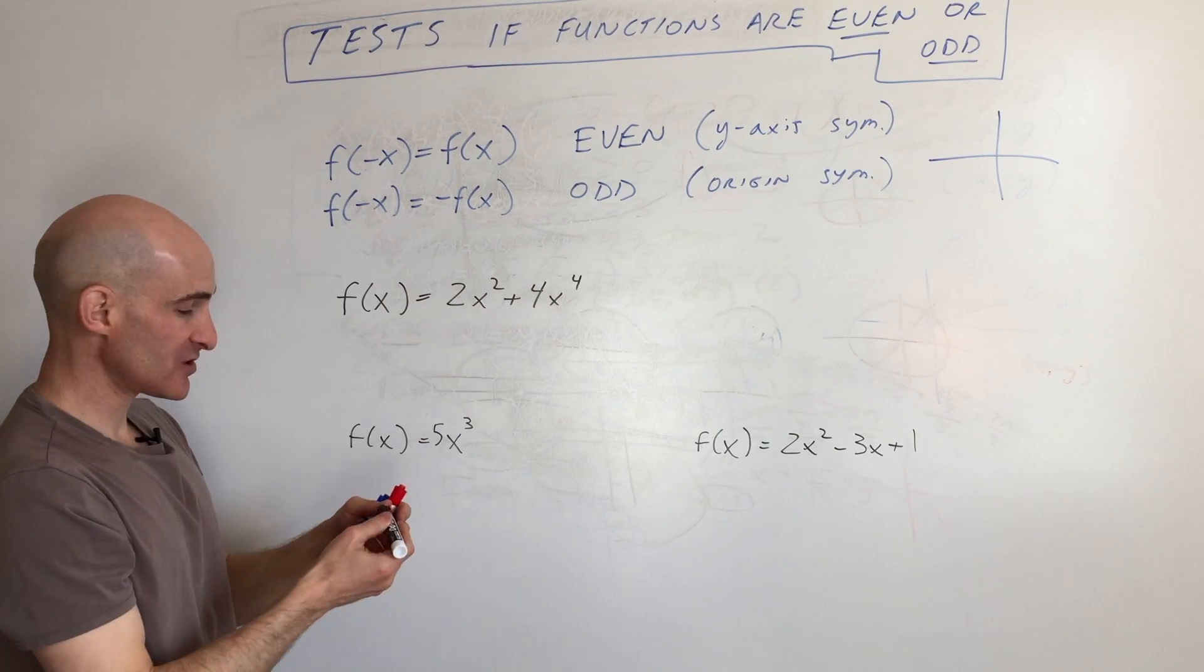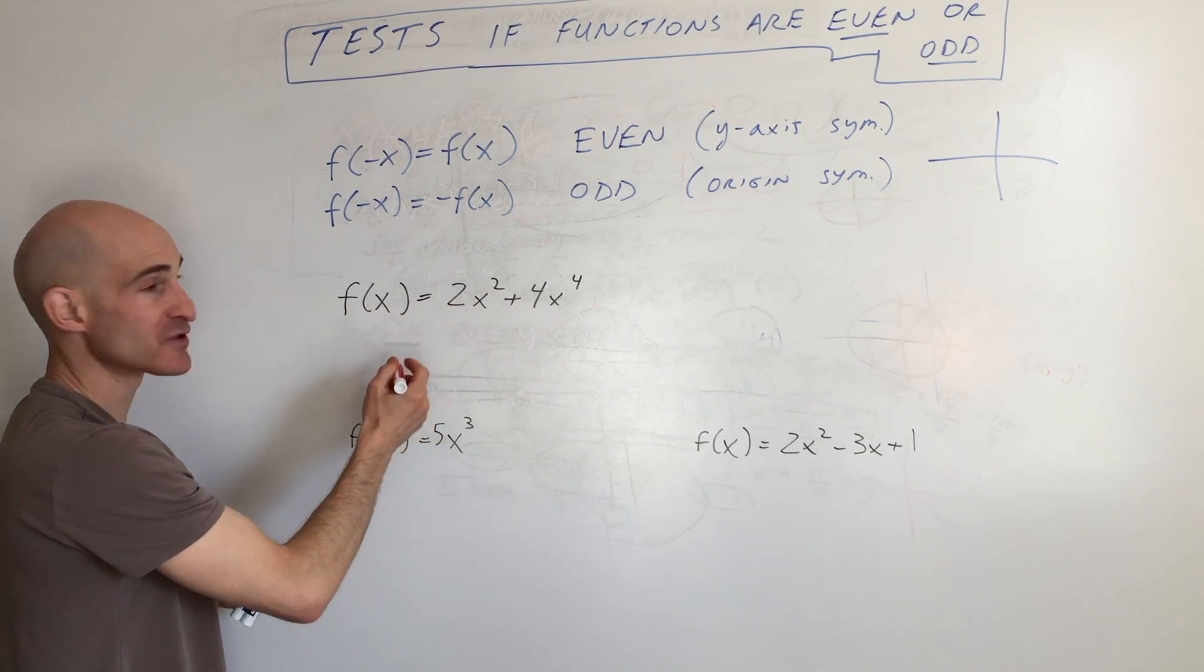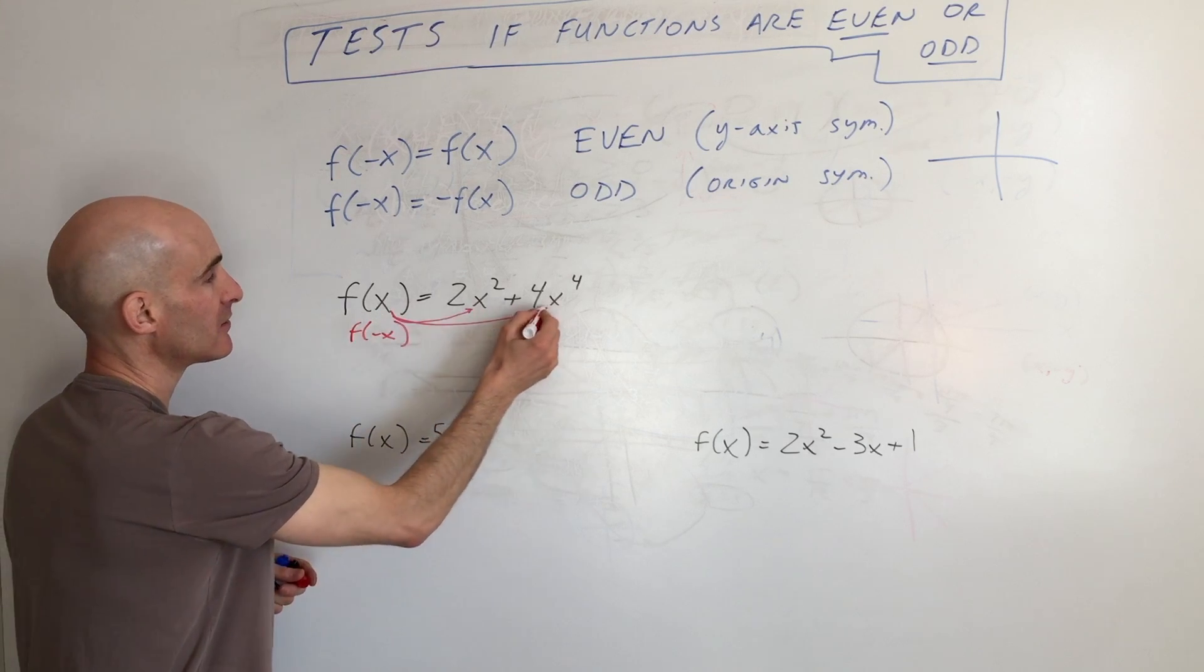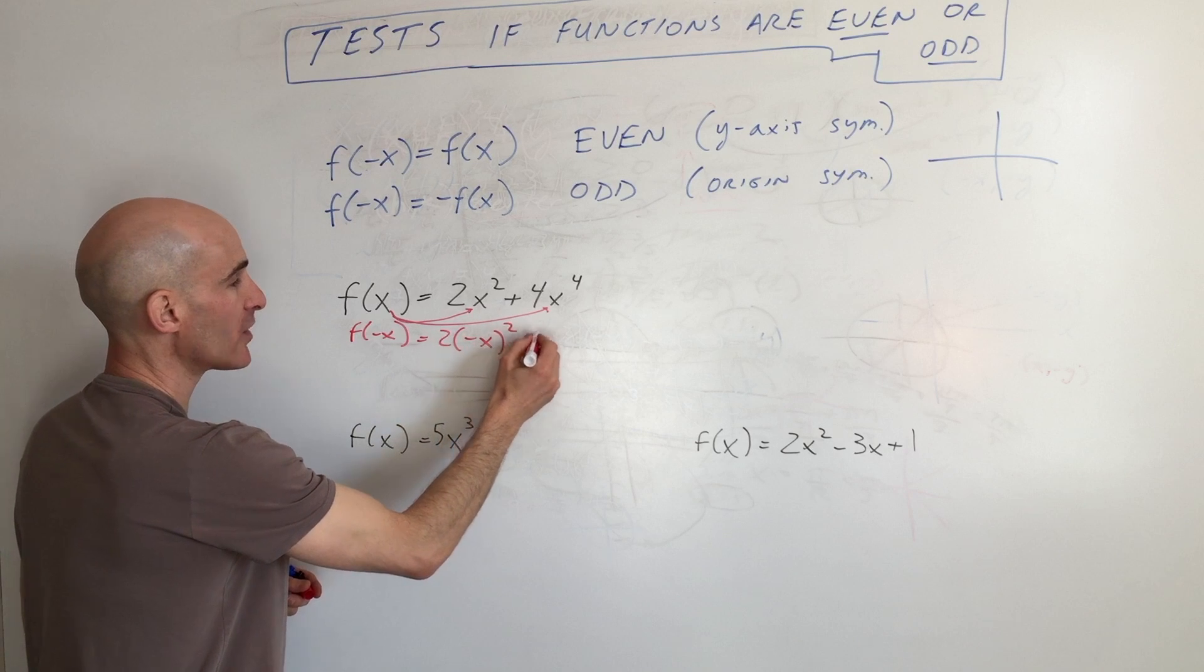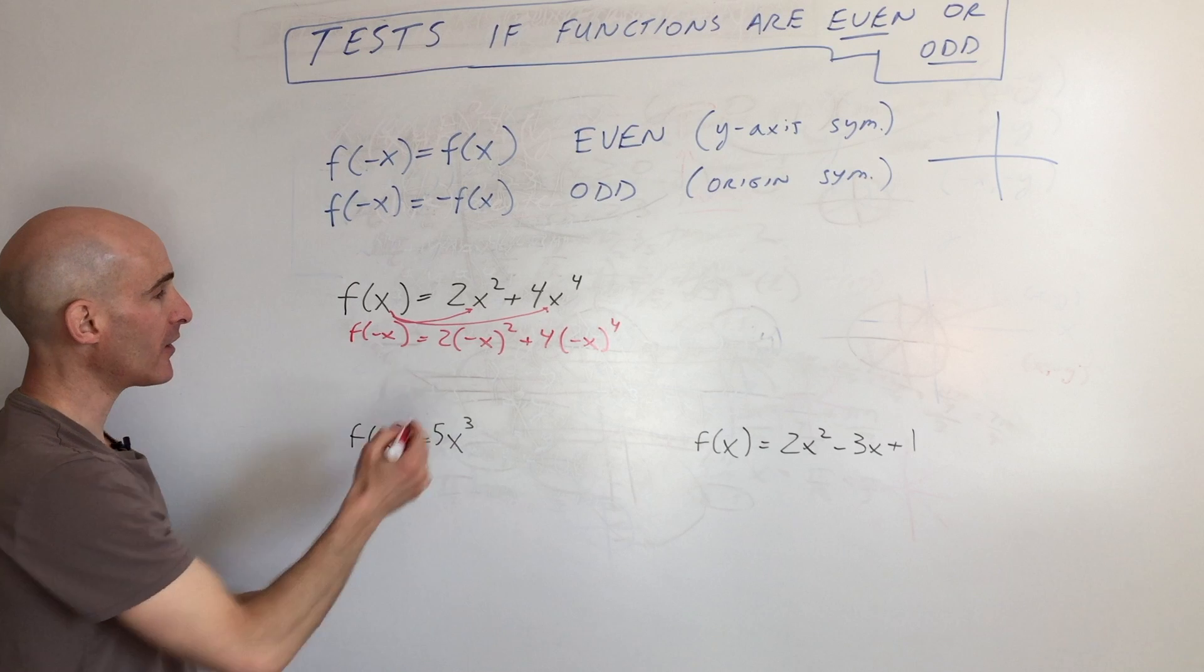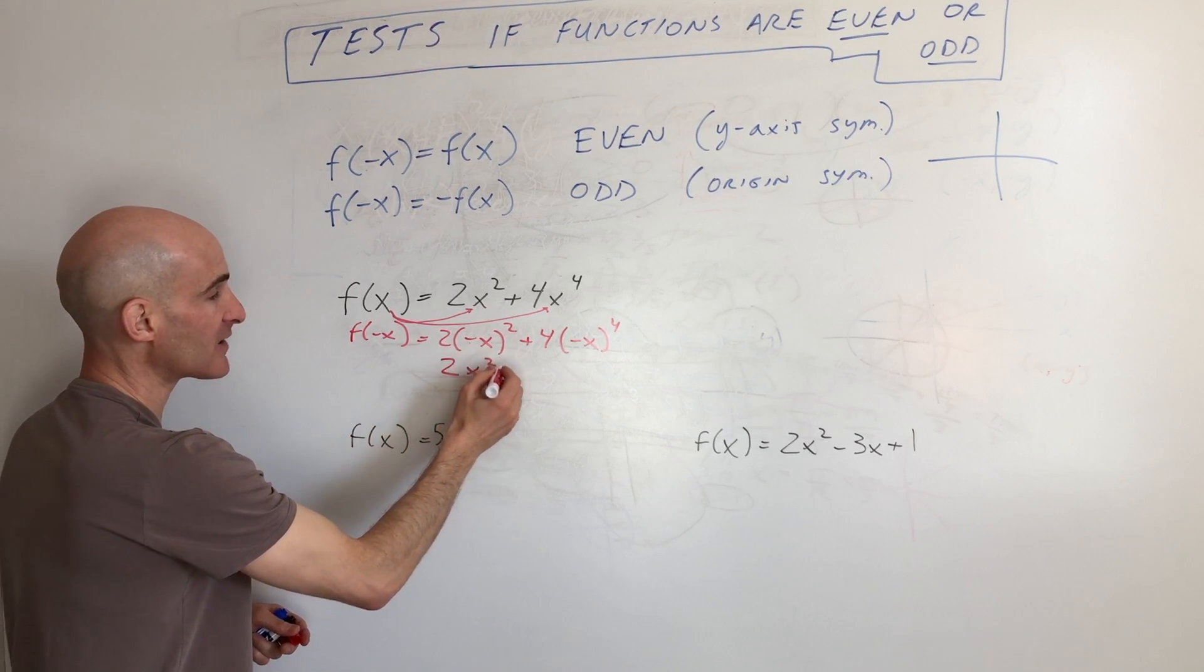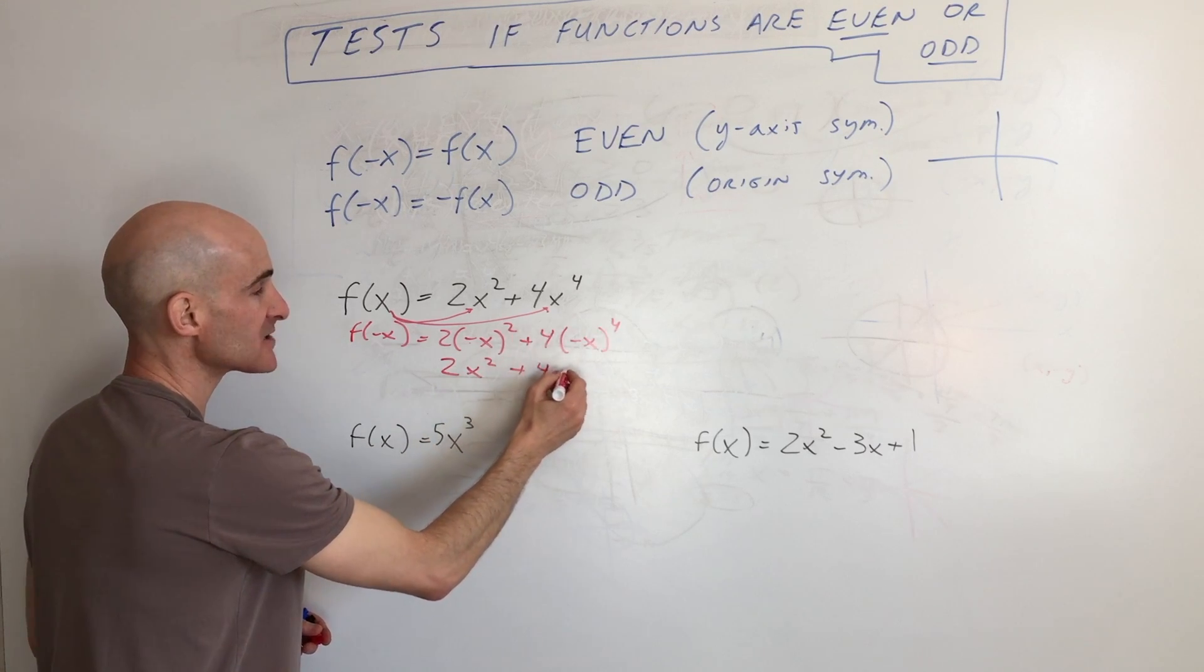So I'll show you some examples here. Let's take a look at this example. f(x) equals 2x squared plus 4x to the fourth. If we put negative x in, we're going to get 2 negative x, the quantity squared, plus 4 times negative x to the fourth power. A negative to an even power is a positive. So we're just going to get back 2x squared, a negative to an even power, we're going to get a positive x to the fourth.